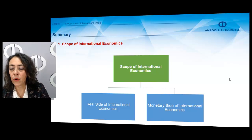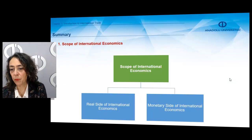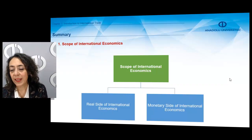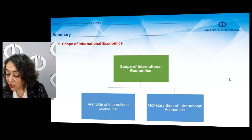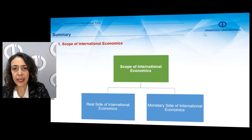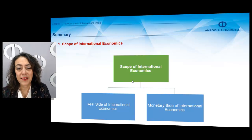On the monetary side of international economics, we add money and the exchange rate into our analysis, taking into consideration their effects on international trade. We also explain the balance of payments, meaning we explain the foreign exchange transactions of the economies. Basically, the scope of international economics is composed of these two important parts.